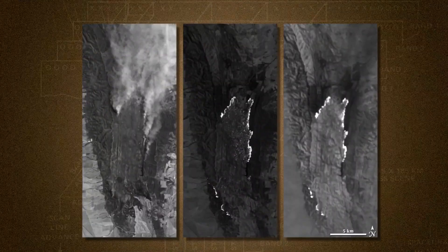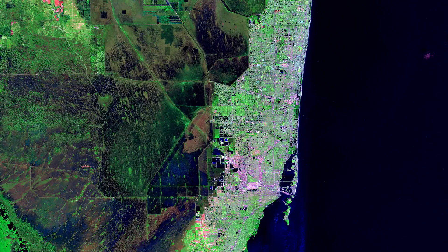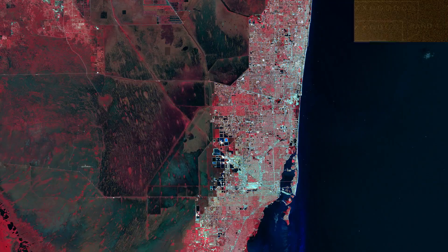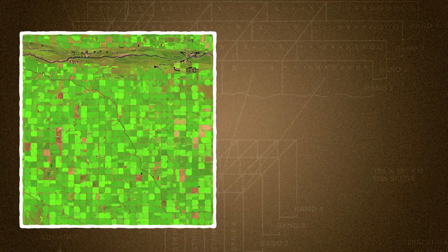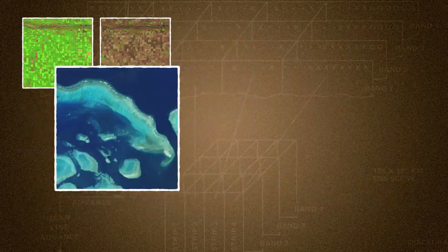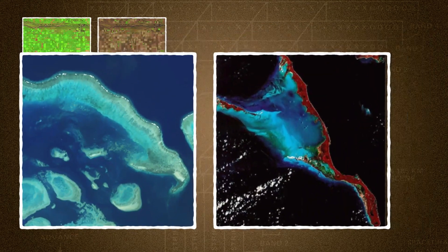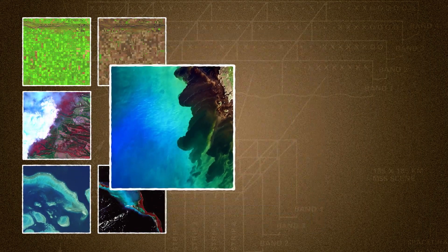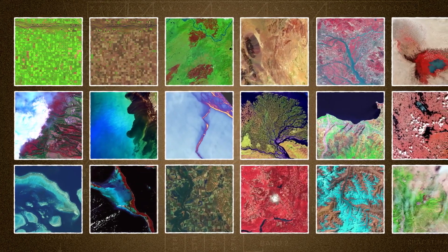Landsat also captures light that we can't see. That type of light can reveal some incredible things when you look at a false color image. Like the difference between types of plants, how healthy those plants are, healthy coral reefs, and even dead coral reefs. Fire tracking, ocean pollution. The possibilities are nearly endless.